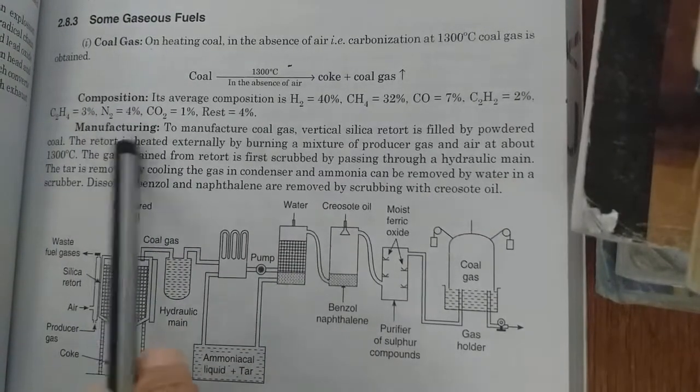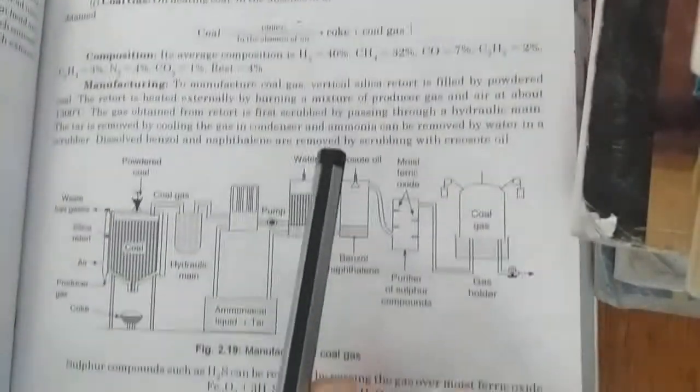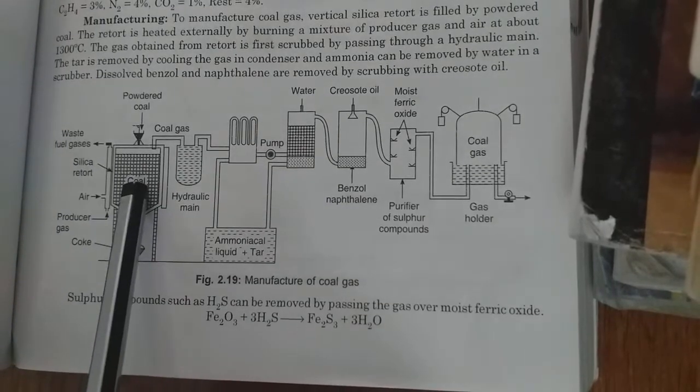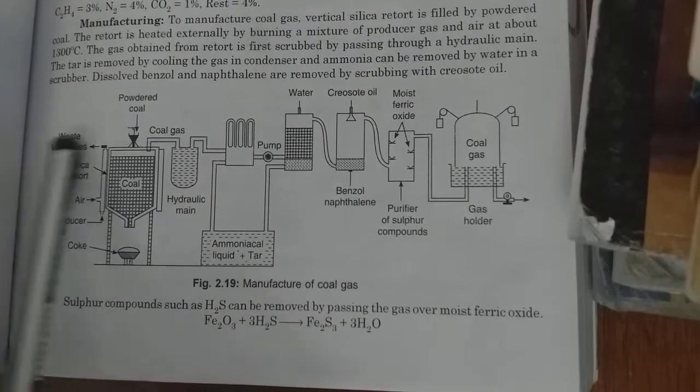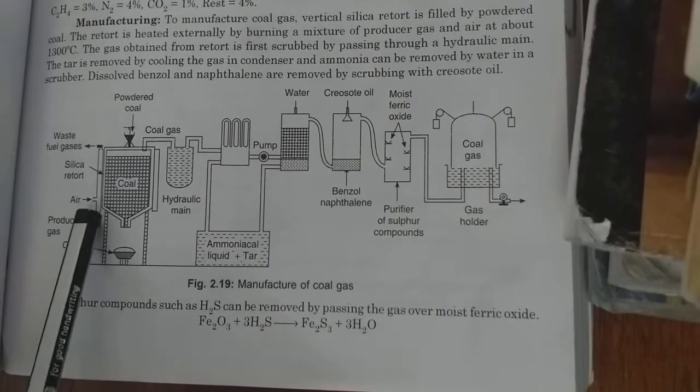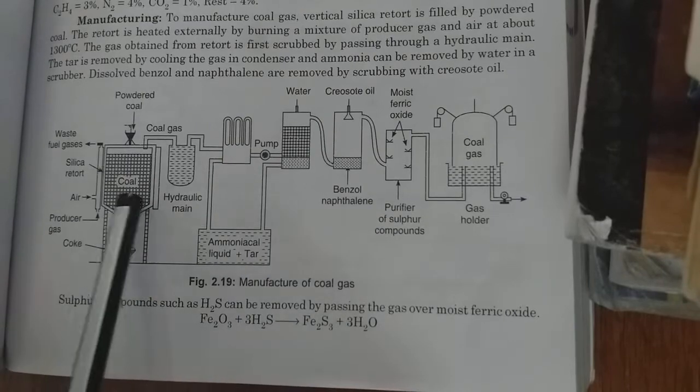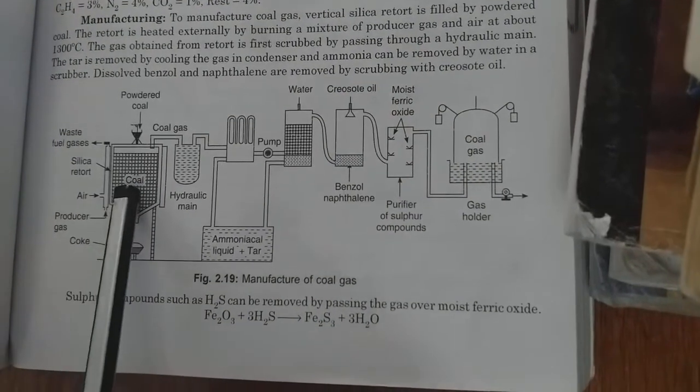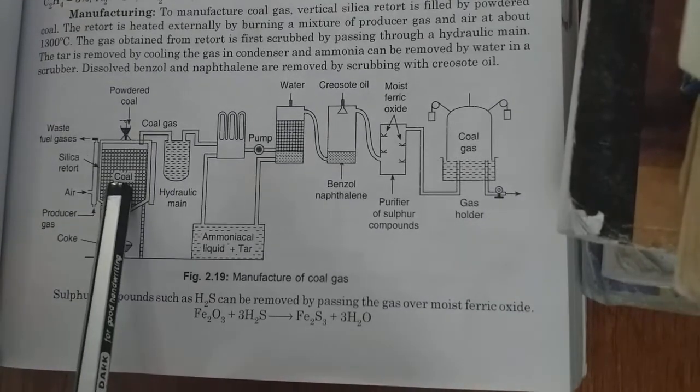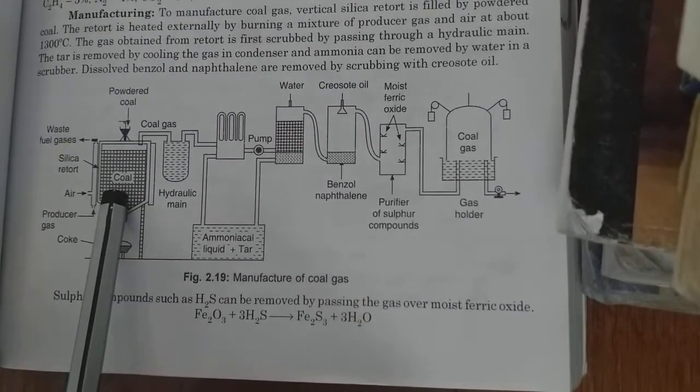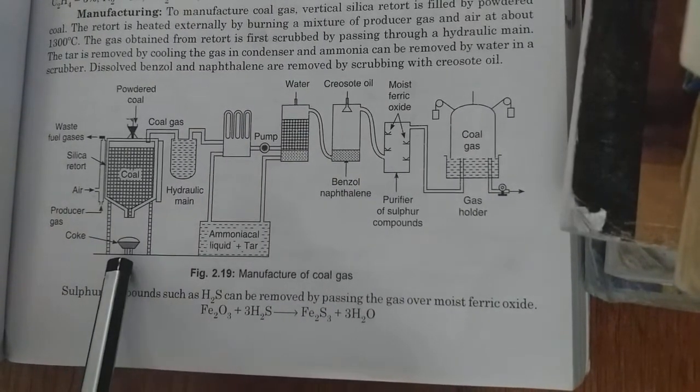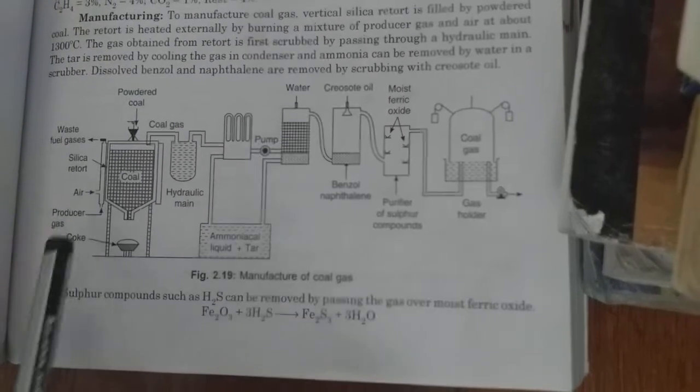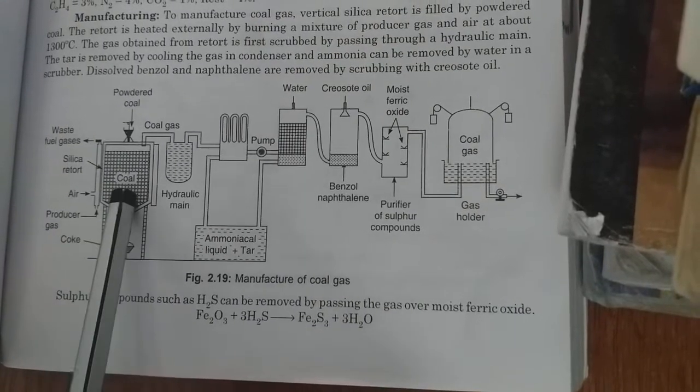Now manufacturing - how coal gas is manufactured in the lab. We have already discussed Otto Hoffman byproduct recovery method. This is the apparatus which shows the manufacturing of coal gas. These are the silica retorts. The powdered coal is filled in this silica retort. After filling, it is heated in the absence of air at temperature 1300 degree centigrade, by which coal is converted into coke. This process is called carbonization.